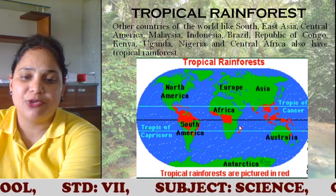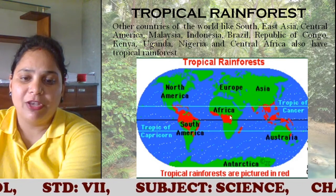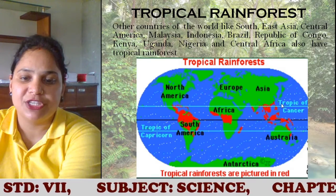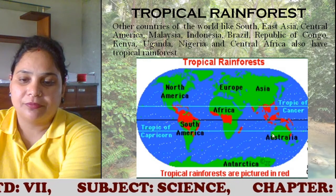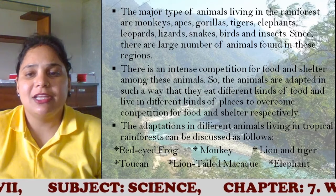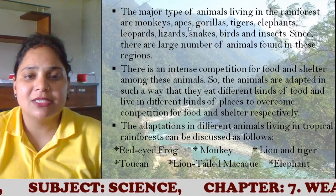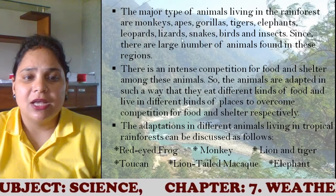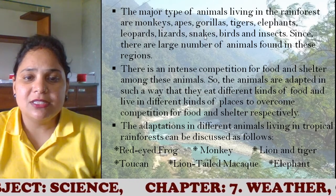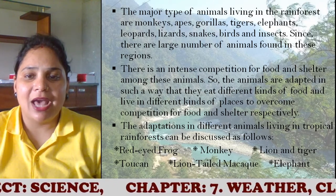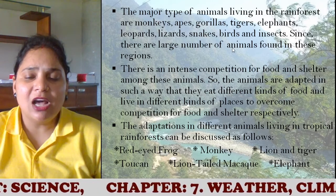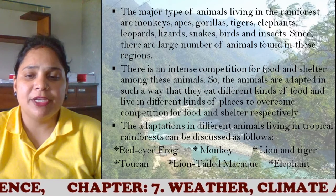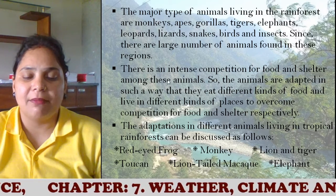The major types of animals living in the rainforest are monkeys, apes, gorillas, tigers, elephants, leopards, lizards, snakes, birds, and insects. Since there is a large number of animals found in this region, there is intense competition for food and shelter among them.